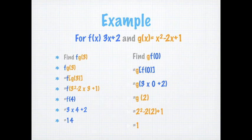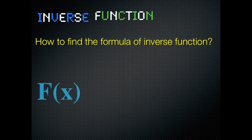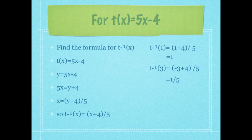Here's another example. What's the formula for an inverse function? We replace f of x with y. Then, we arrange the formula to make x the subject. Replacing y with x gives the formula of the inverse function. For example, t of x equals to 5x minus 4. Replace t of x with y: y equals to 5x minus 4. Rearrange to make x the subject. Hence, the inverse of t of x equals to x plus 4 over 5.